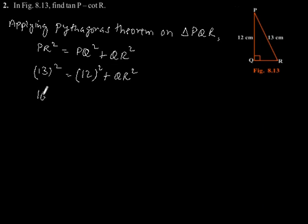This gives 169 equals 144 plus QR², which gives QR² equals 25.